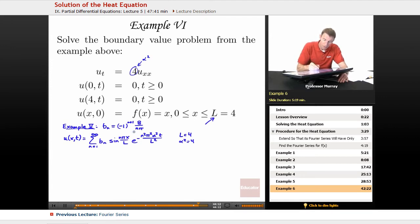And we've got our bn. We figured that out in example 5. Quite a bit of work to figure that out. That's probably the most work, actually finding those Fourier coefficients.